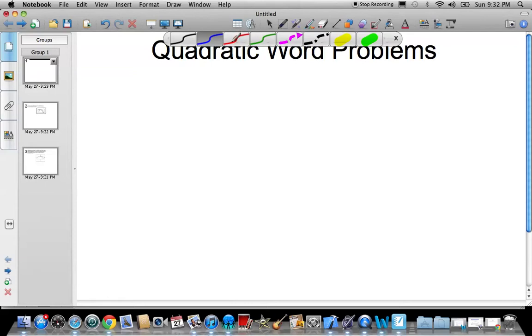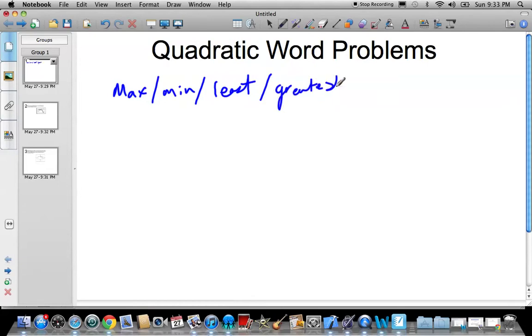So if you remember, I mentioned in class about quadratic word problems and recognizing keywords. If you see the words max, min, least, or greatest, you know you're looking for the vertex. That means x equals negative b over 2a, axis of symmetry, or completing the square.